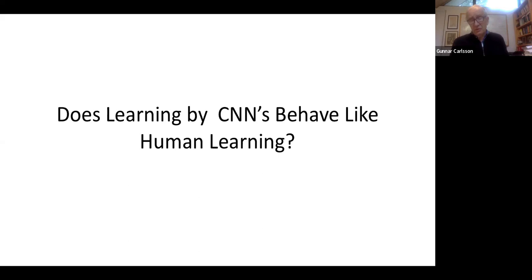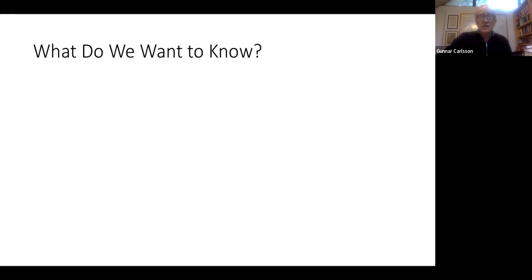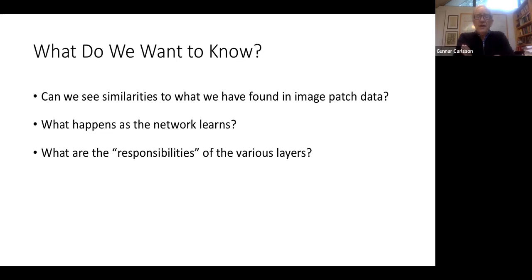A question one might ask: does the learning by CNNs behave like human learning? This is joint work with my student Richard Gabrielson. We want to know: can we see similarities to what we've found in image patch data? We might also ask what happens as the network learns and what are the responsibilities of the various layers. We want to have ways of addressing those questions and trying to understand them.